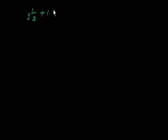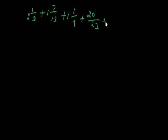After knowing harmonic progression, we can find any term — the nth term, the 4th term, the 5th term — just using the arithmetic progression formula, because arithmetic progression is the opposite of harmonic progression. I am taking one more example in which I will calculate its nth term.